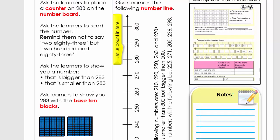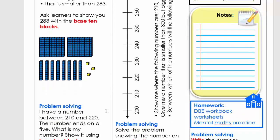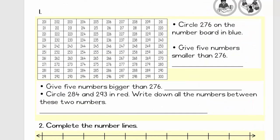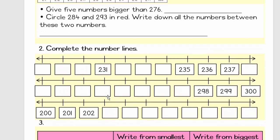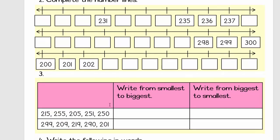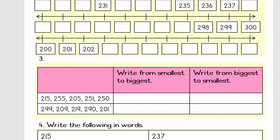Let's go to the worksheet. The worksheet is questions on things that we already done. They're going to complete number lines and write numbers from the smallest to the biggest, and then write numbers in words. Remember, if there's not enough space, do it in their writing books.